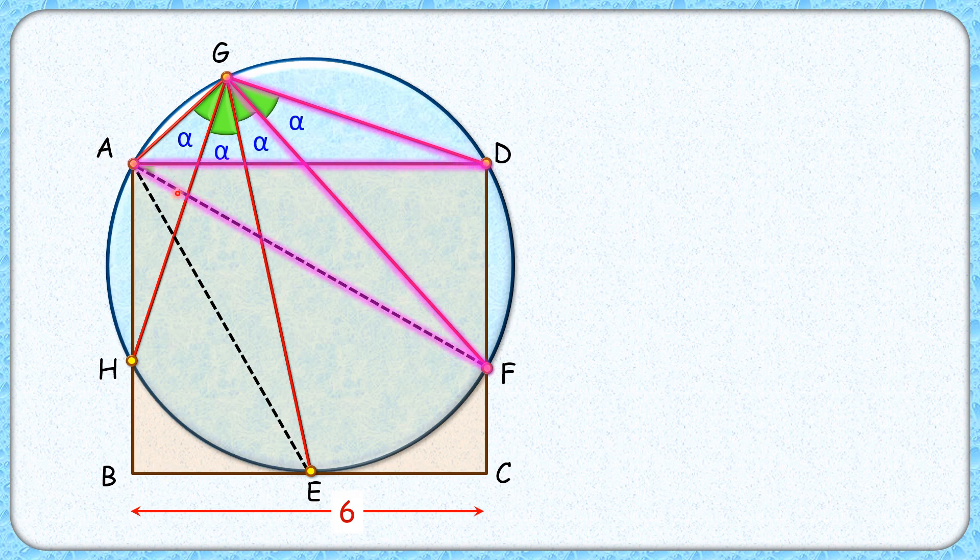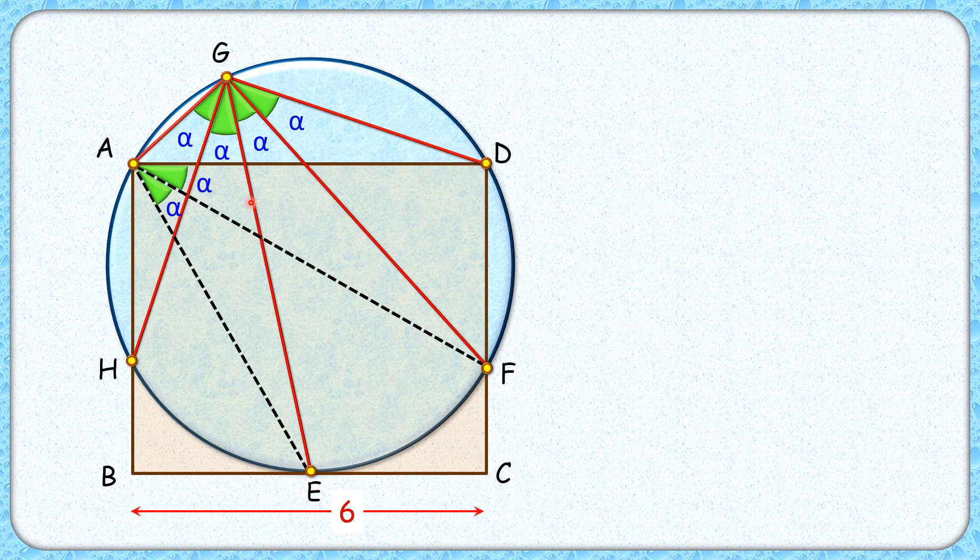Same logic: EF is sustaining angle alpha at point G, and thus EF will sustain same angle alpha at point A. And similarly HE will sustain angle alpha at point G, and thus it will sustain same angle alpha at point A.